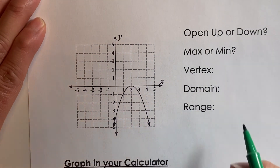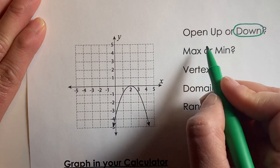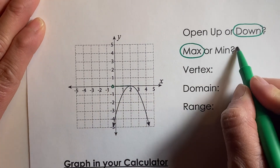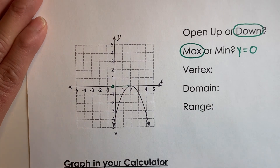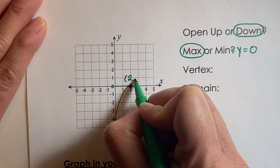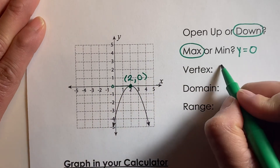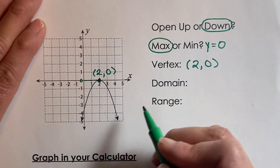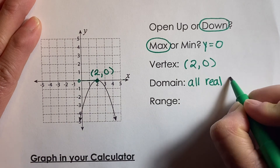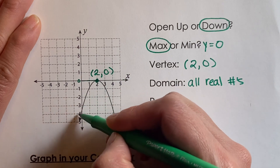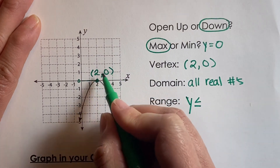One more example. This graph is opening down, so this is a maximum. The maximum y value is 0, so your maximum is y equals 0. The vertex is the highest point in the graph and falls on the x-intercept at the point 2 comma 0. The max or min value is always the y value from your vertex. The domain, because there are arrows at the end, is all real numbers. Since the graph opens down, it goes below 0, so the range is y less than or equal to 0. You can now go ahead and complete slides 5, 7, and 8.